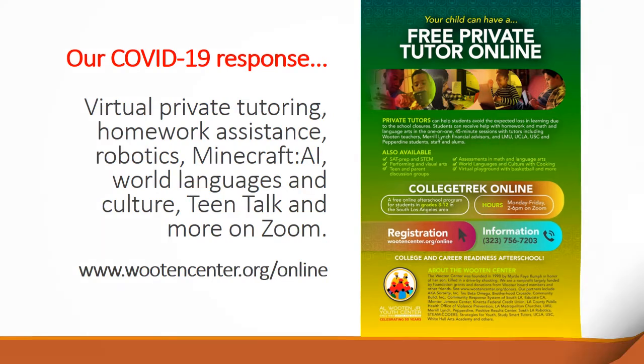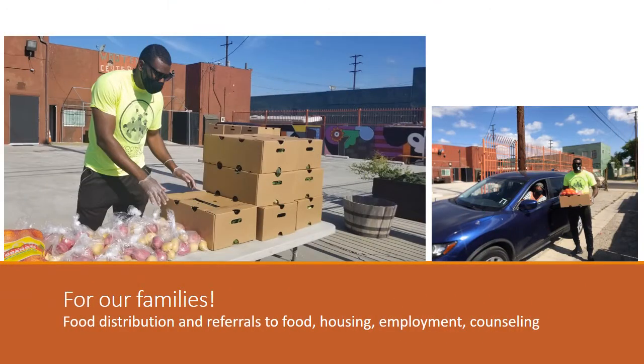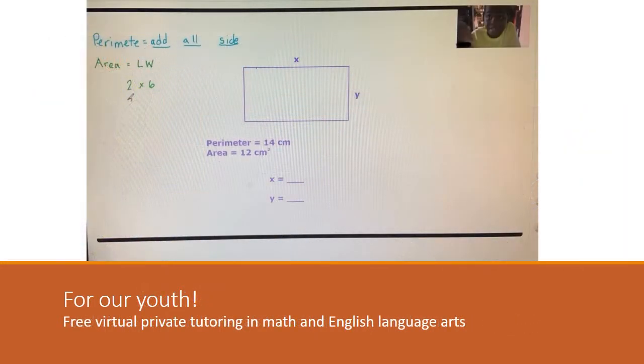It's A because A has eight lines. B has one, two, three, four, five, six, seven lines.